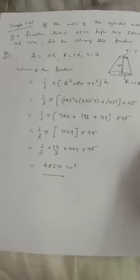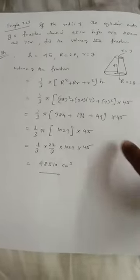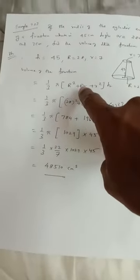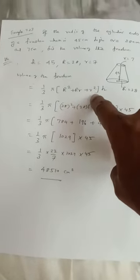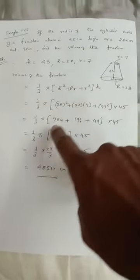1 by 3 into pi into bigger radius square plus r square plus r square into h, 1 by 3 into pi of bigger radius is already given.